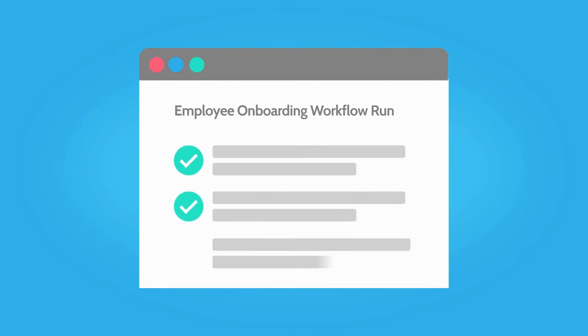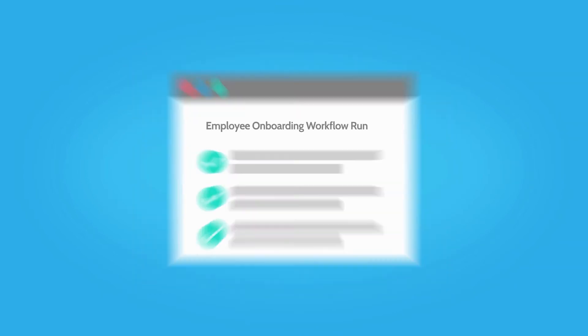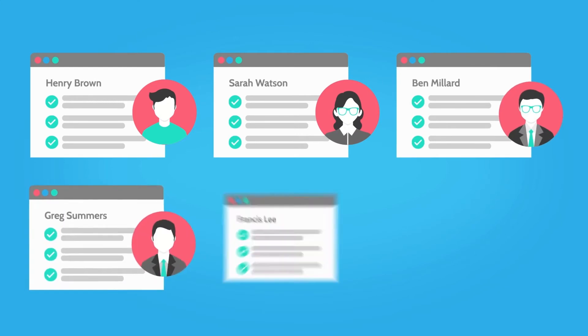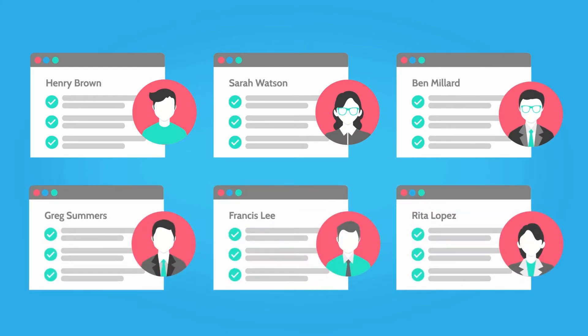Workflow runs are single copies of your workflow which track your progress. For example, you would have a unique workflow run for each instance of a new employee completing the onboarding process.